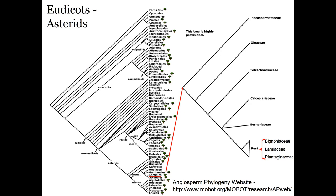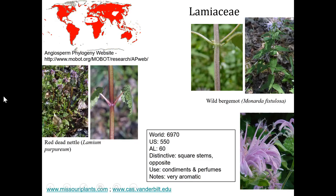The next lineage we're going to talk about is the order Lamiales. The Lamiales includes olives and invasive relatives like Chinese privet, but we're going to focus on just the Lamiaceae. That's the mint family — there are about 6,900, almost 7,000 species in the world; 550 in the US; and about 60 in Alabama.